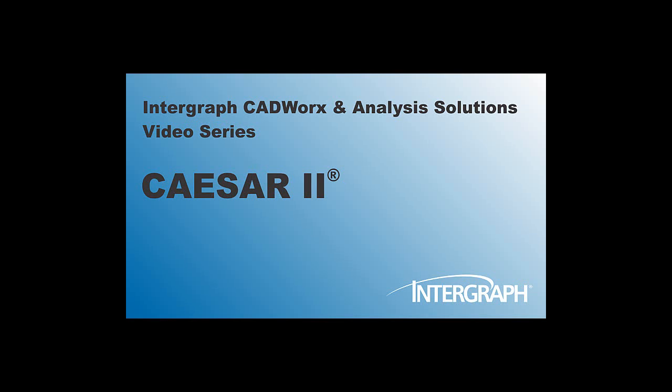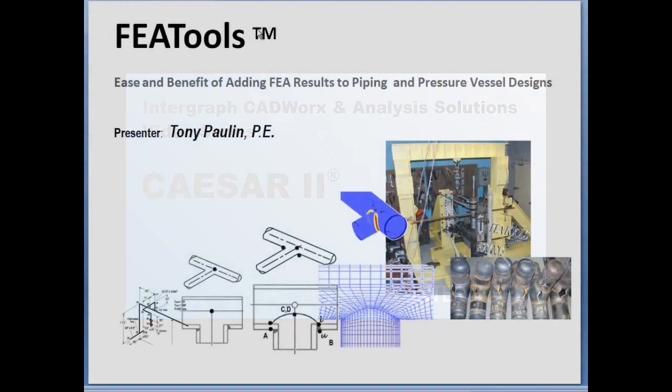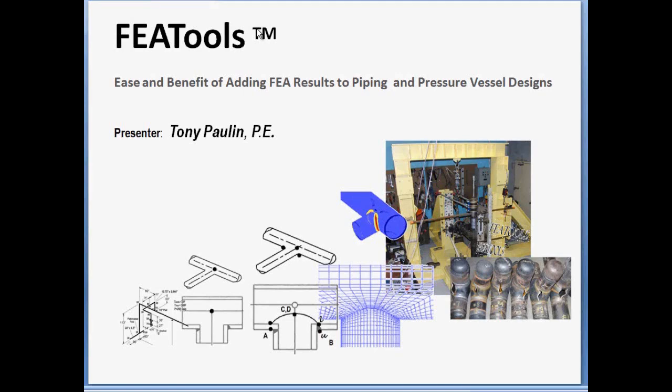Welcome to another in our series of Intergraph CAESAR and Analysis Solutions videos featuring CAESAR II. This presentation focuses on the ease and benefit of adding FEA results to piping and pressure vessel designs. We'll be discussing the why and when a more advanced or more applicable solution is needed, and we'll see that one of the ways to get this is by using FEA tools.